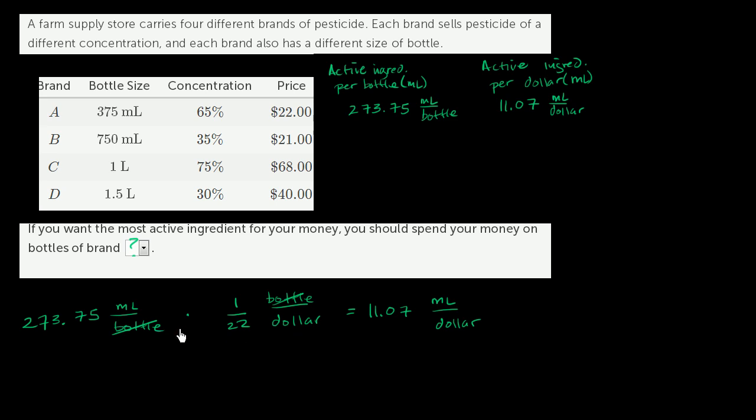And notice, you could have done this through common sense. This is equivalent to just dividing. This is how much you get for a $22 bottle divided by $22. You get the quantity or the milliliters per dollar. But either way, let's do it for the rest of them.